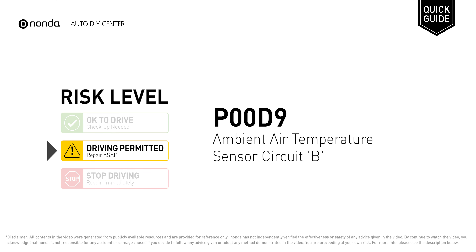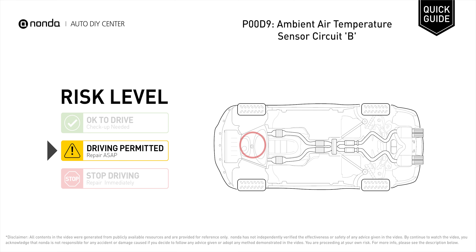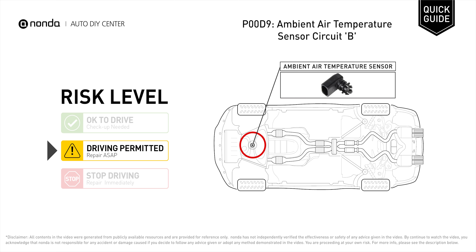P00D9 is a diagnostic trouble code for ambient air temperature sensor circuit B malfunction. Under this circumstance, short distance driving is permitted, but your vehicle should be repaired ASAP. It indicates that the ambient air temperature to intake air temperature ratio is imbalanced.